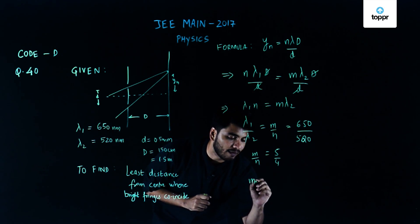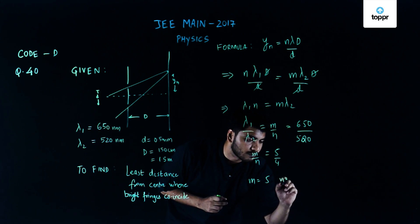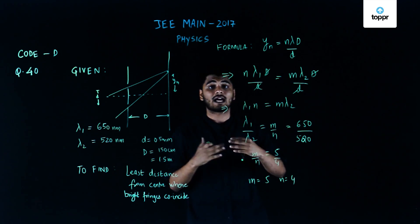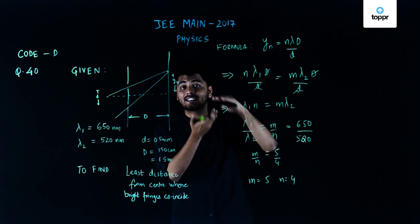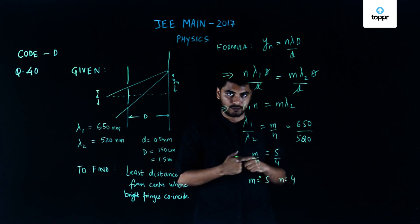I'm assuming my values because since we need to find the least, I assume m equals 5 and n equals 4. This could have been any value, 65 as well as 52 could also be the values, but since we need the first and the least position where this maximum would be formed, we take m equals 5 and n equals 4.